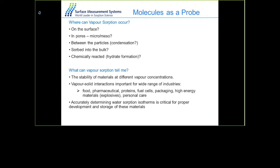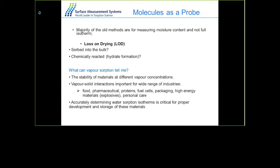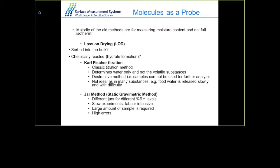Accurately determining water sorption isotherms is obviously a critical process for the proper development and storage of materials. Some older techniques are generally used for measuring moisture content only and wouldn't give you full mineral isotherm adsorption and desorption isotherms. These methods include loss on drying, which basically involves weighing the sample, heating it, and re-weighing it to see how much water has been lost.